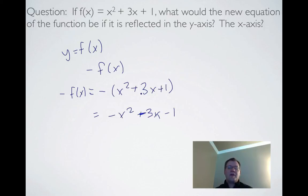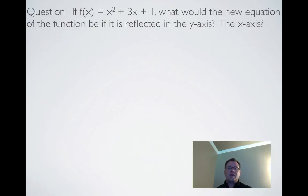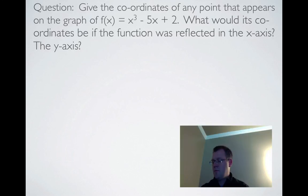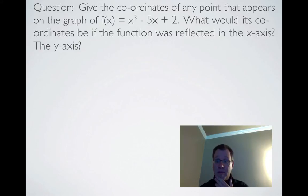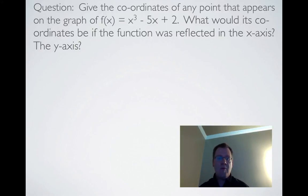That's how functions change under reflections: substitute in -x if reflecting in the y-axis, and use -f(x) if reflecting in the x-axis. Last example: give the coordinates of any point on the graph of f(x) = x³ - 5x + 2. What are its coordinates if the function is reflected in the x-axis, and what if it's reflected in the y-axis?